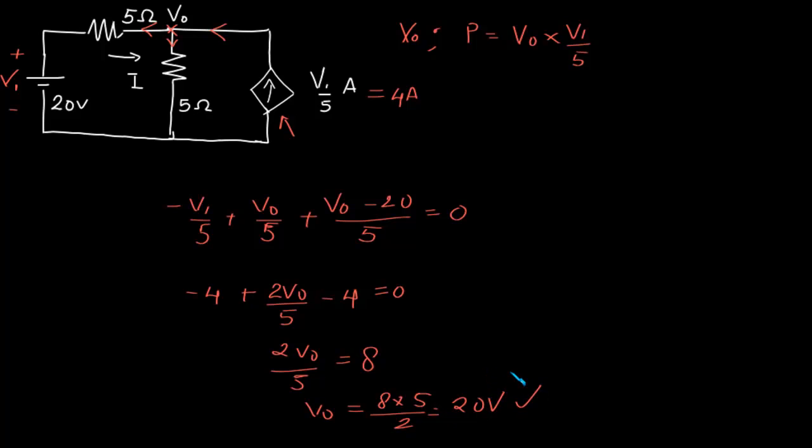Now we have found out what is V0. So we can find out the power as 20 into V1 by 5. We have already found out as 4 amps. That is, 80 watts.